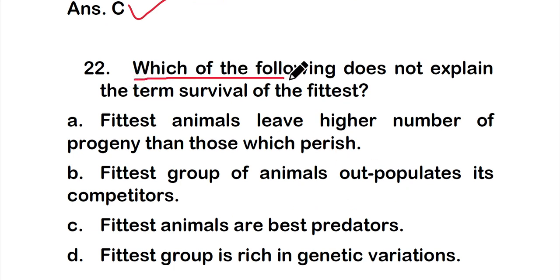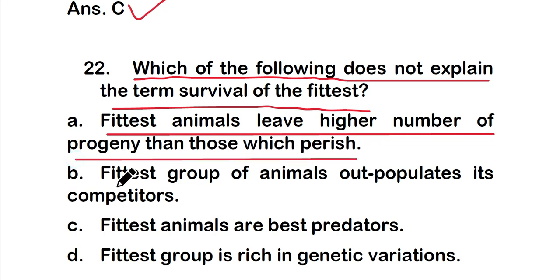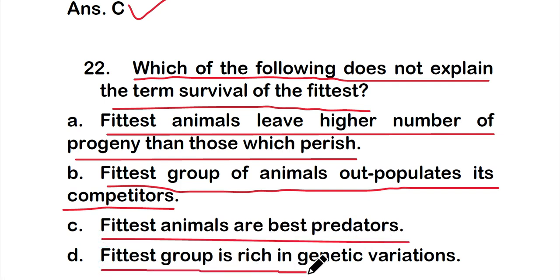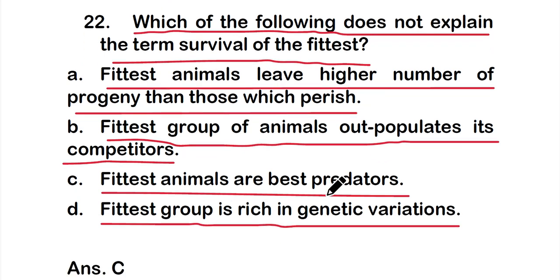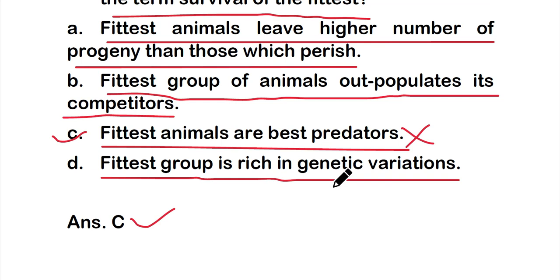Question number 22: Which of the following does not explain the term 'survival of the fittest'? Option A: fittest animal lives to produce a higher number of progeny than those which perish. Option B: fittest group of animals outpopulates its competitors. Option C: fittest animals are best predators. Option D: fittest group is rich in genetic variation. The right answer is option C — fittest animals are best predators — as this does not explain survival of the fittest.